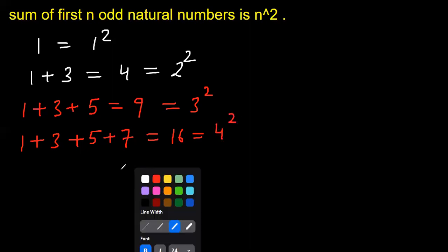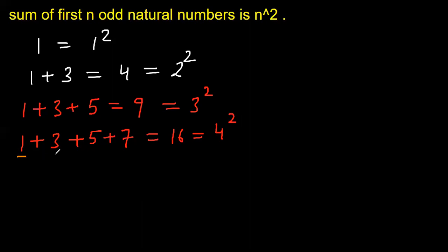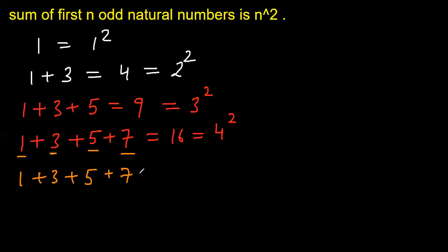So what we observe is the sum of the first four odd natural numbers equals 4 squared, and the sum of the first three odd natural numbers equals 3 squared. Let's take one more: 1 plus 3 plus 5 plus 7 plus 9, and that equals 25, which is the same as 5 squared.